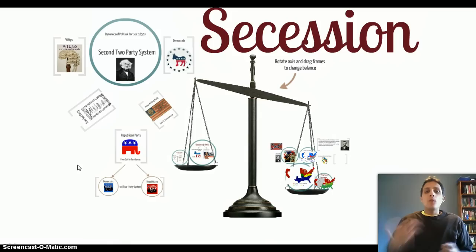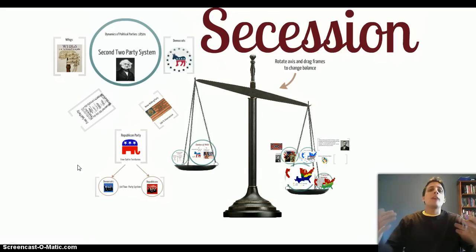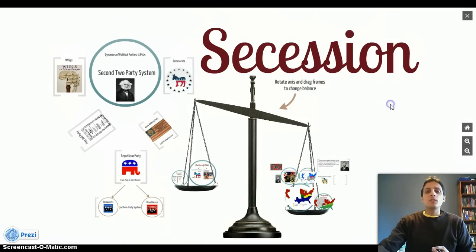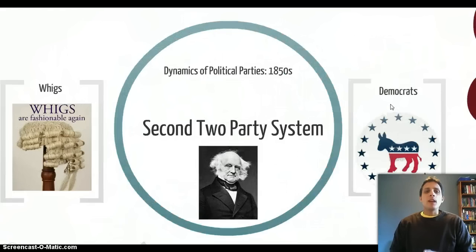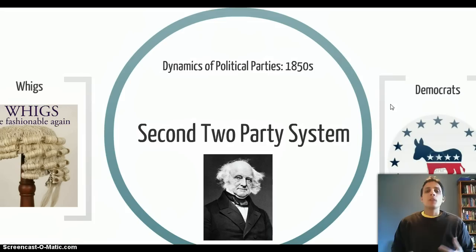Before we get into how the balance of power is knocked out of scale — because in the 1840s and 1850s, a lot of what we've been talking about is how politicians and Americans are trying to maintain a balance of power — it really seems like a losing effort. Before we get into how this really disintegrates, it has a lot to do with political parties. So we're going to start with an explanation of the political parties in America, starting with the dynamics of the political parties of the 1850s.